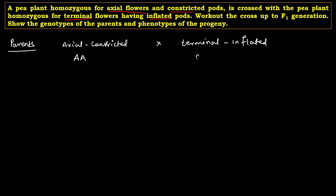For terminal flowers, we will go with small a, small a. Now for constricted pod and inflated pod: the inflated pod is the dominant one, so we will go with capital I, capital I, and for constricted we will go with small i, small i. So here is our genotype for the parents.